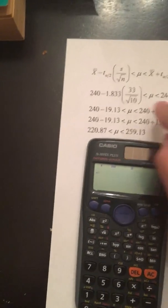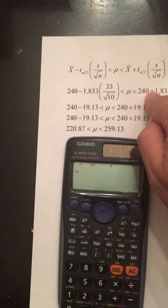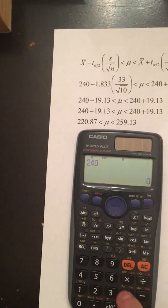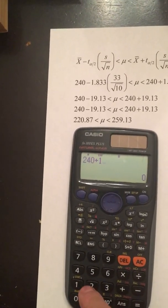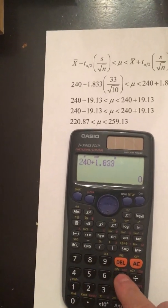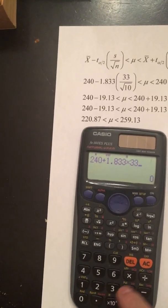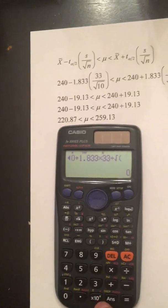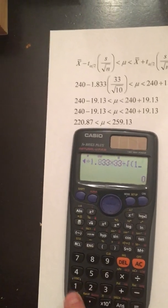Now the process changes to a plus. Type in 240 plus 1.833 times 33 divided by the square root of 10.